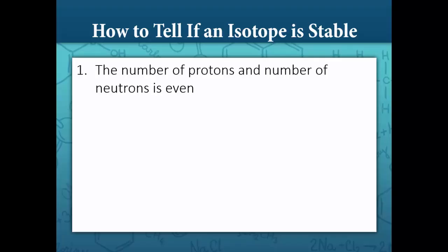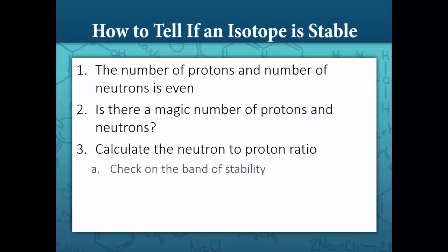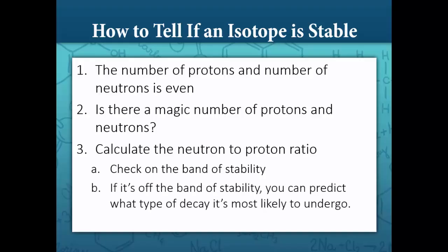To predict whether an isotope will be stable, follow these steps. First, determine if the number of protons and number of neutrons is an even number. Next, determine if the number of protons and/or neutrons is equal to a magic number. Third, calculate the neutron-to-proton ratio. Check that ratio on the band of stability. If it falls on the band of stability, it is stable; if not, you can predict what type of decay it is most likely to undergo.